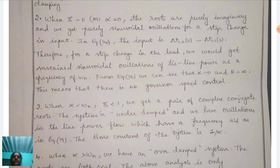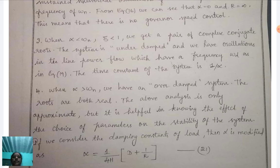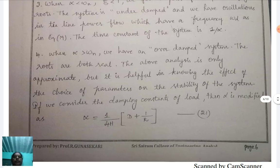In equation 14, the input is del P_L2(s) − del P_L1(s). Therefore, for a step change in load, we would get sustained sinusoidal oscillations of tie-line power at a frequency of ω_N. From equation 16, we see that α = 0 corresponds to R = ∞, meaning there is no governor speed control. When α < ω_N (i.e., ζ < 1), we get a pair of complex conjugate roots — the system is under-damped and oscillations in tie-line power flow occur at frequency ω_D. The time constant of the system is 1/α.